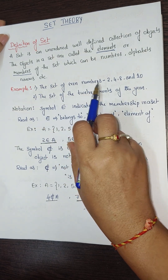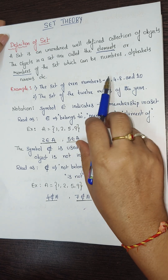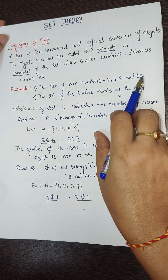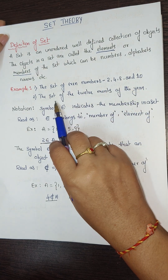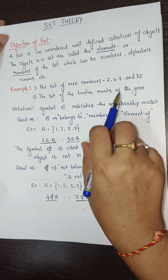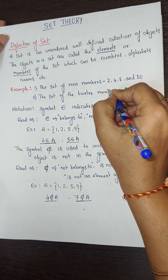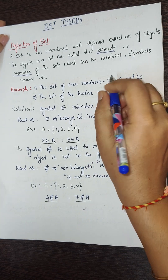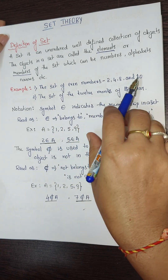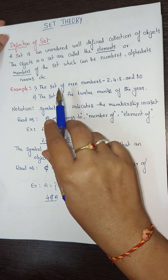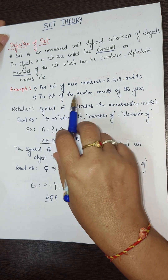For example, the set of even numbers contains two, four, eight — these are the set of even numbers. Another example: the set of 12 months of a year — that is names like January, February, March, April, May, June, July, and so on.